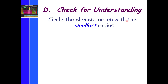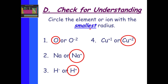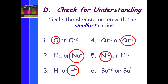Check for understanding: the element or ion with the smallest radius is the most positive one. Oxygen or oxygen two-minus? Oxygen. Sodium or sodium-plus? Sodium-plus. Hydrogen-minus or hydrogen-plus? Hydrogen-plus. Copper one-plus or copper two-plus? Copper two-plus. Nitrogen two-minus or nitrogen three-minus? Two-minus — it's the most positive one. Even if they're both negative, it's still the most positive one. Barium two-plus or barium? Barium two-plus.